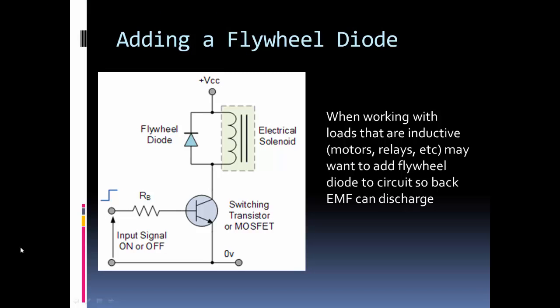OK so we looked at using a transistor as a switch. Here's something I want to mention because it is possible you might be using the transistor to switch a device that might be a very inductive load. And in that case, you probably want to include a flywheel diode. Here I've shown an example. So the electrical solenoid can be any type of load that has a high inductance. So what type of loads have high inductances?